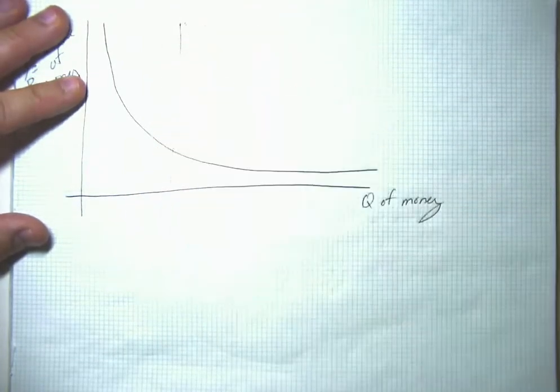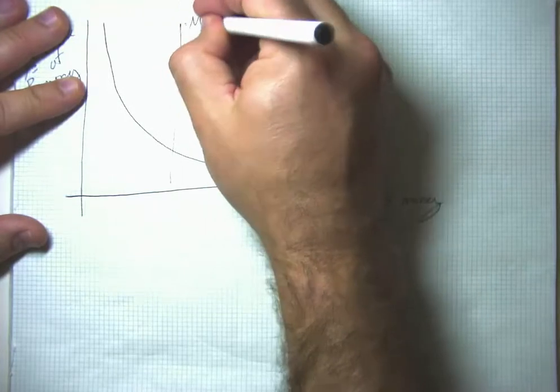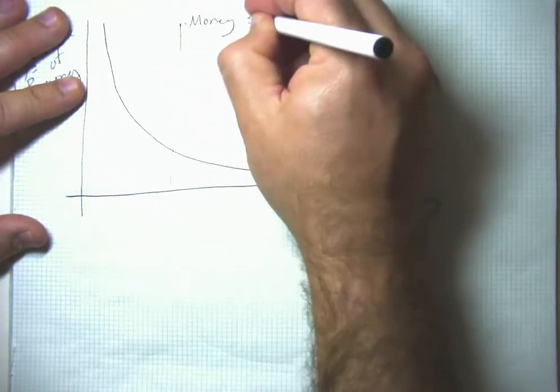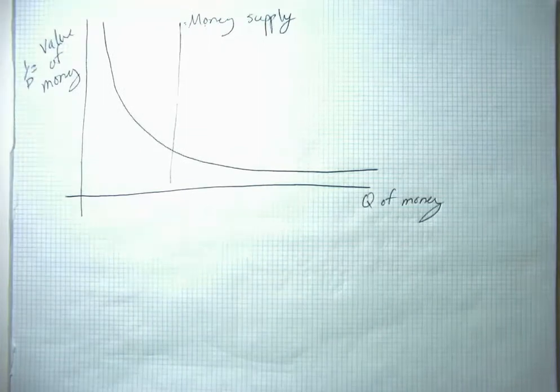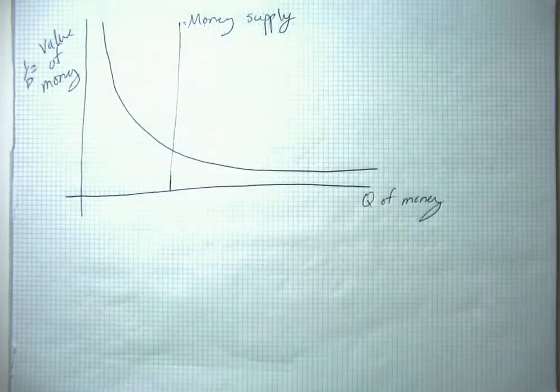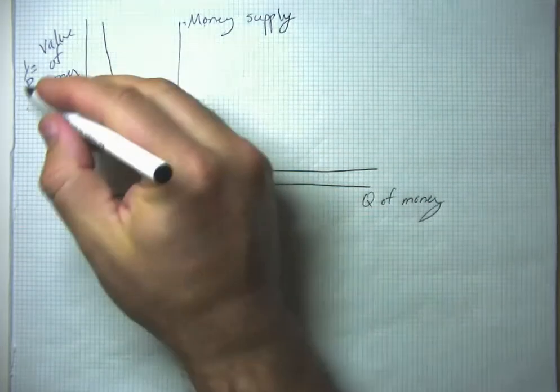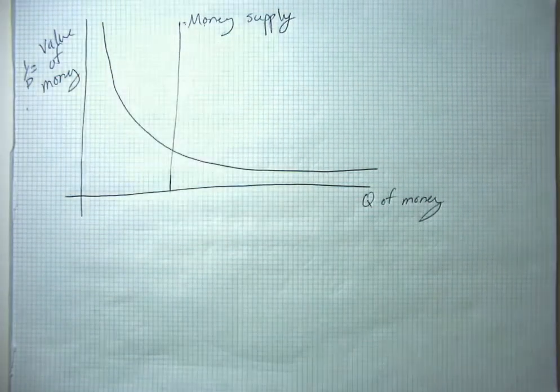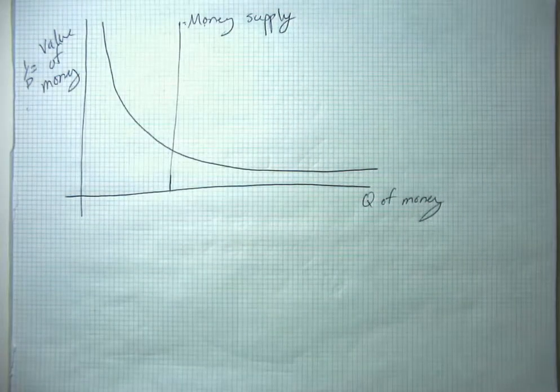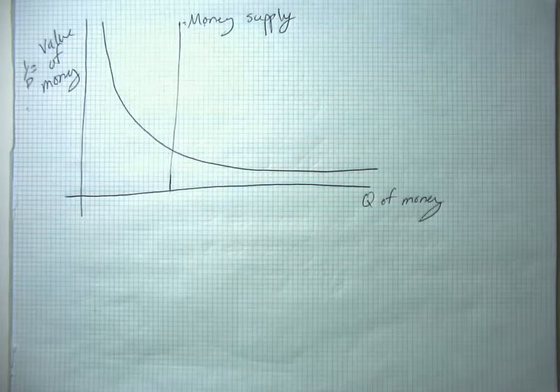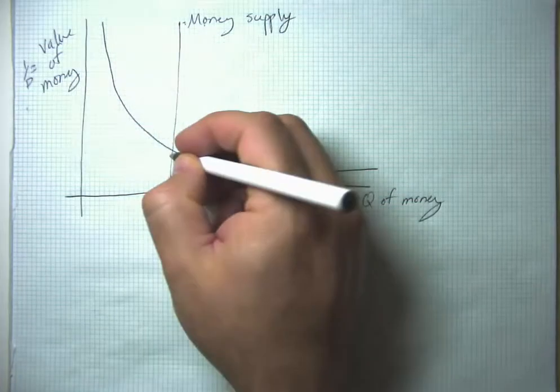And we've got the money supply right here. I've drawn it as vertical under the assumption that the money supply just is what it is, and the Federal Reserve doesn't change the money supply in response to changes in the price level. That might or might not be a realistic way to think about what the Federal Reserve does, but we'll go ahead and think about that being the answer for now.